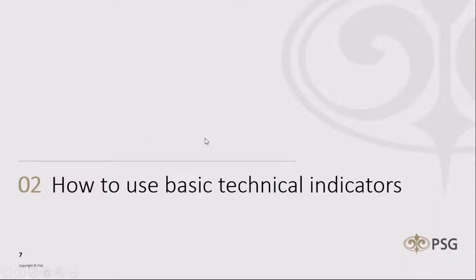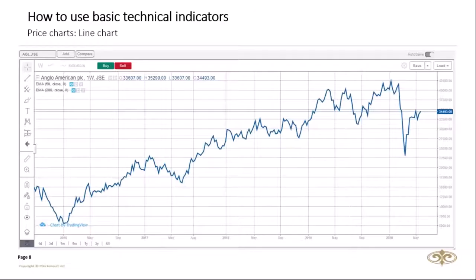Now let's look at basic technical indicators. First, your primary indicator is the price chart — price action is number one. The easiest way to display price action is a line chart. If you see a share at 10 rand today but it was 11 yesterday, 12 the day before, the price is falling. If it was 8 yesterday, the price is going up. You connect all those prices together over the long term to create a line chart, which gives you direction and lets you identify trends and patterns.